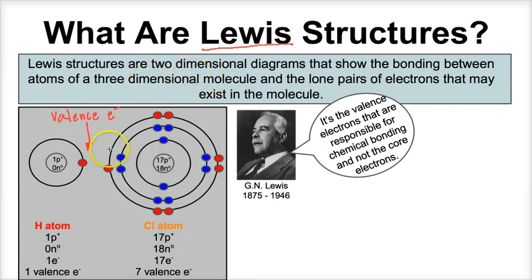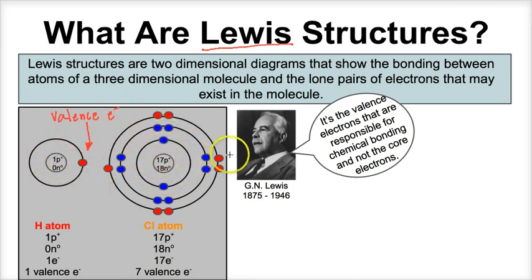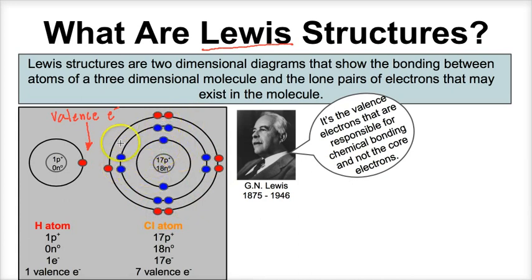G.N. Lewis knew this. In eighth or ninth grade science, the Bohr model of the atom was used to describe electron arrangement, so hydrogen and chlorine looked a certain way. G.N. Lewis came along and said he really didn't need to draw the inner or core electrons. If it's the valence electrons responsible for chemical bonding, then all he needed to be concerned about were the valence electrons.